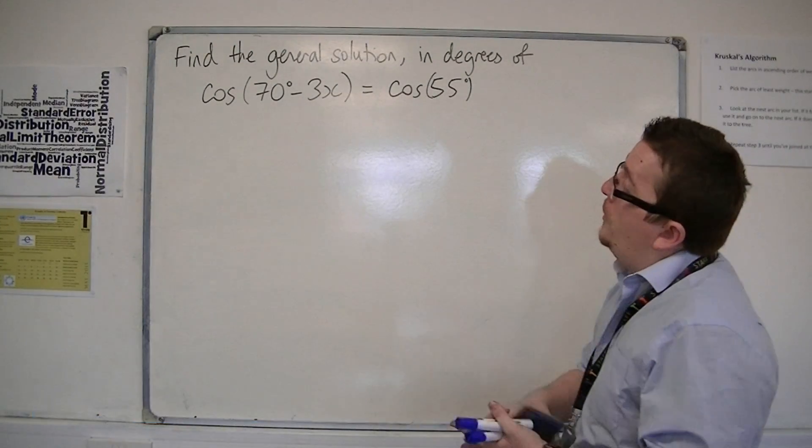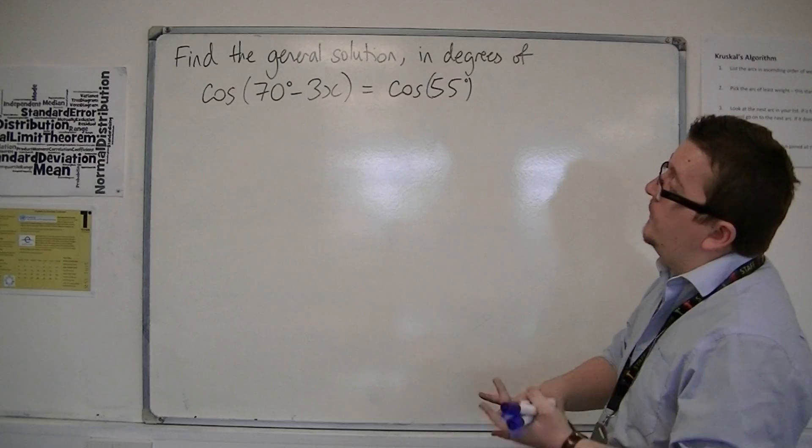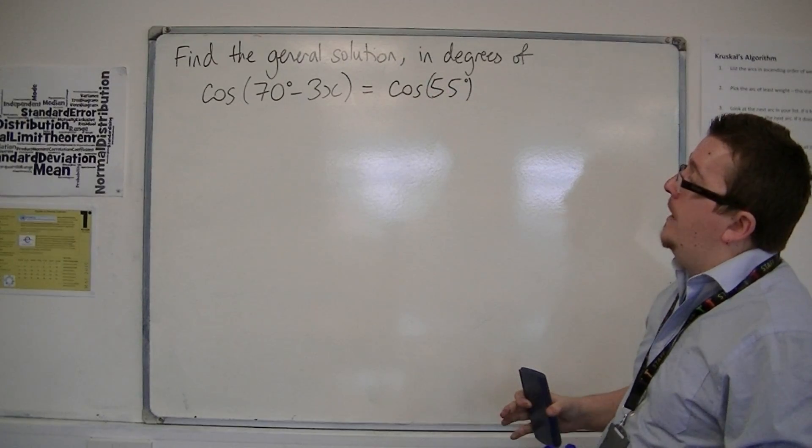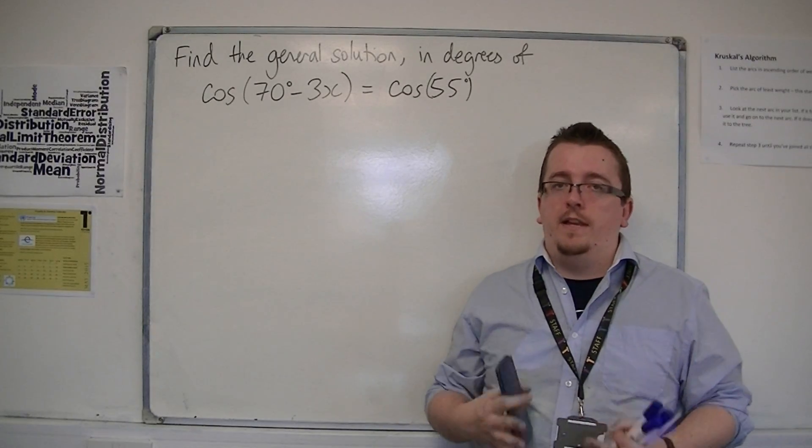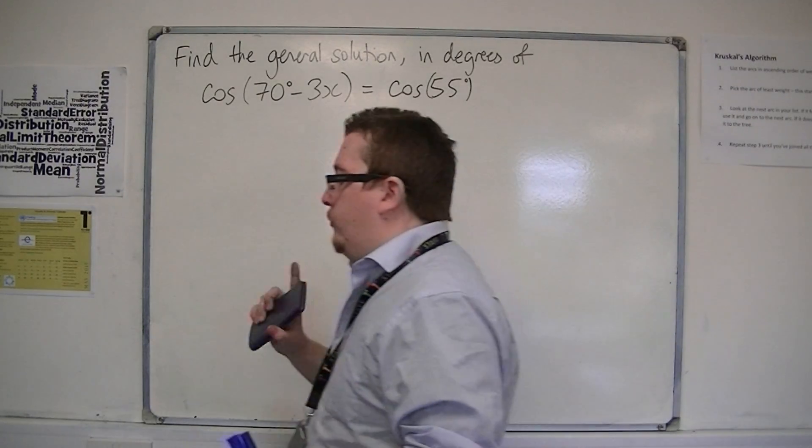In this video we're going to be looking at finding the general solution in degrees of cos(70 - 3x) = cos(55). This looks a lot more complicated than it actually is, so that's good news.